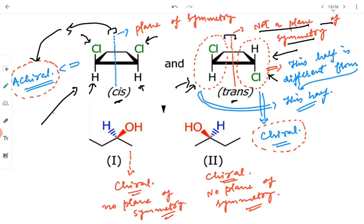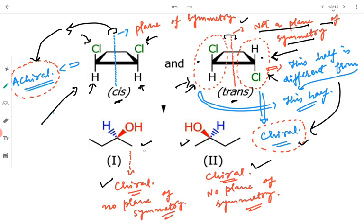In the trans isomer, the two halves divided by the plane are not identical, so this plane is not a plane of symmetry. This molecule lacks a plane of symmetry and is therefore chiral. Similarly, both mirror image forms shown are chiral because four different groups are present at the chirality centers.